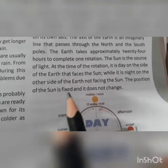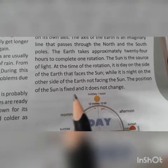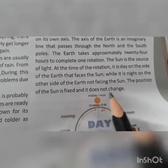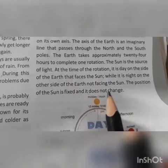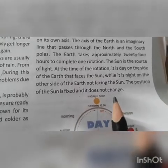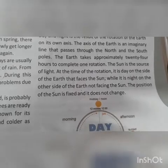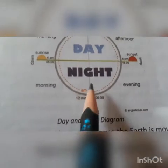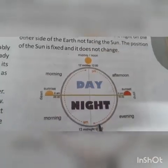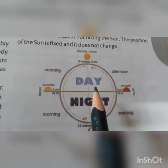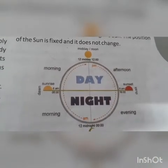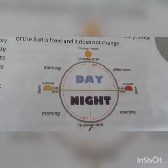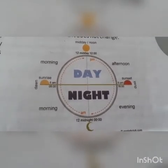The position of the sun is fixed and does not change — the sun does not move from its place. It is the earth that moves, not the sun. This is the diagram of day and night. It is very clear from the diagram: the side which faces the sun has day, and the side which is opposite to the sun has night.